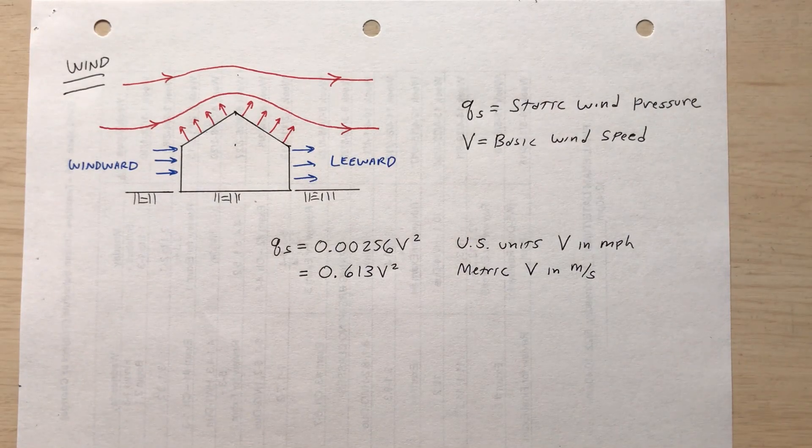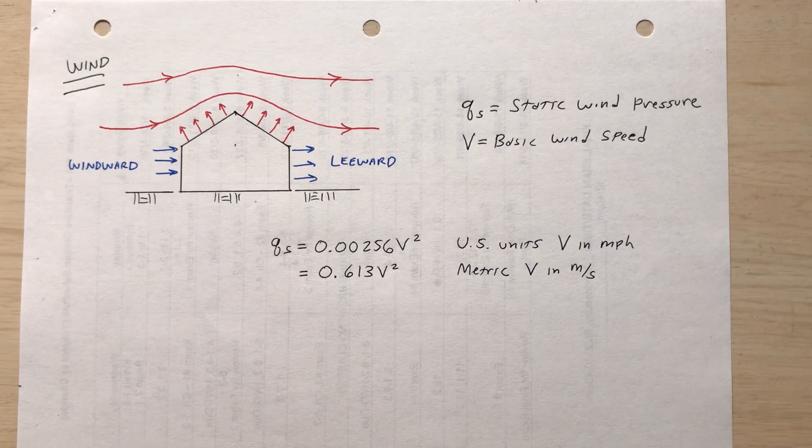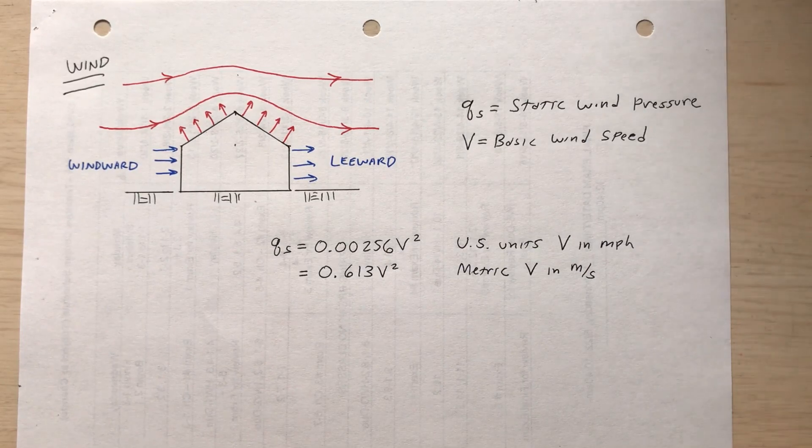Also worth mentioning is that if pressure is positive on the windward side, then it will be negative on the leeward side, because there's suction on the leeward side of the building.